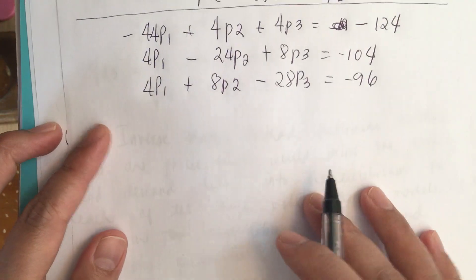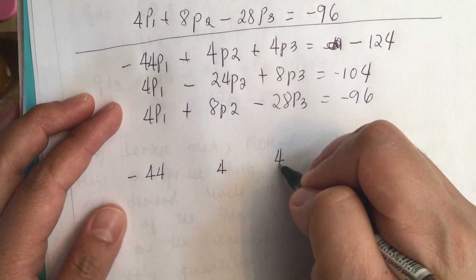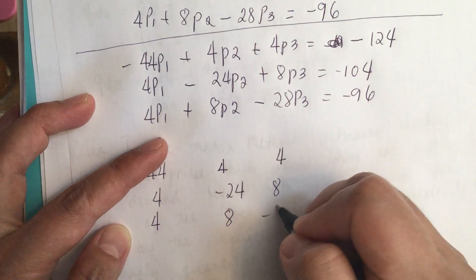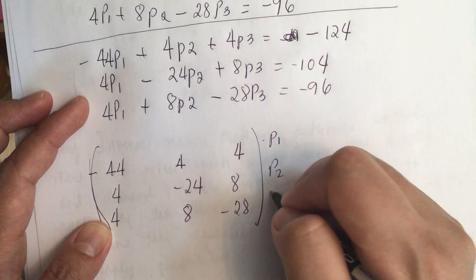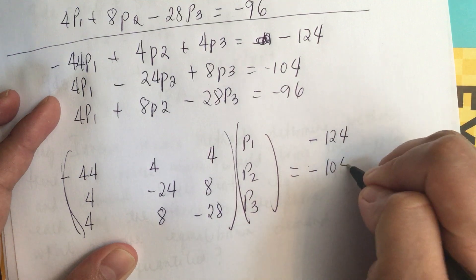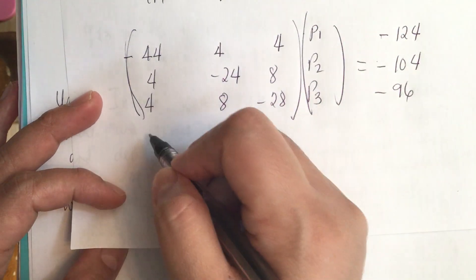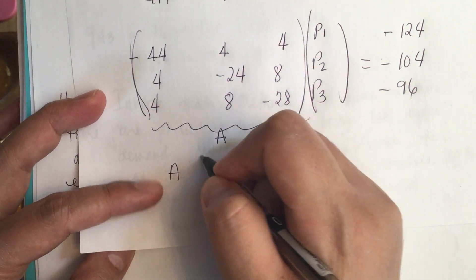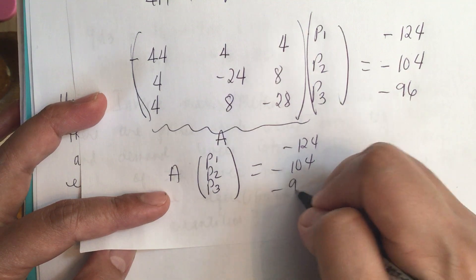Now we form the matrix system. We have: minus 44p1 plus 4p2 plus 4p3 equals minus 124; 4p1 minus 24p2 plus 8p3 equals minus 104; and 4p1 plus 8p2 minus 28p3 equals minus 96. Writing this as a matrix A times the vector [p1, p2, p3] equals [minus 124, minus 104, minus 96].